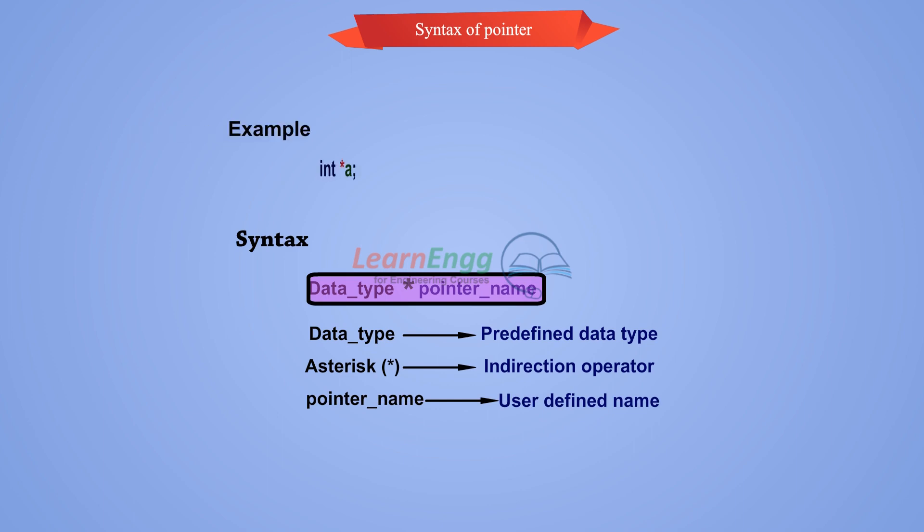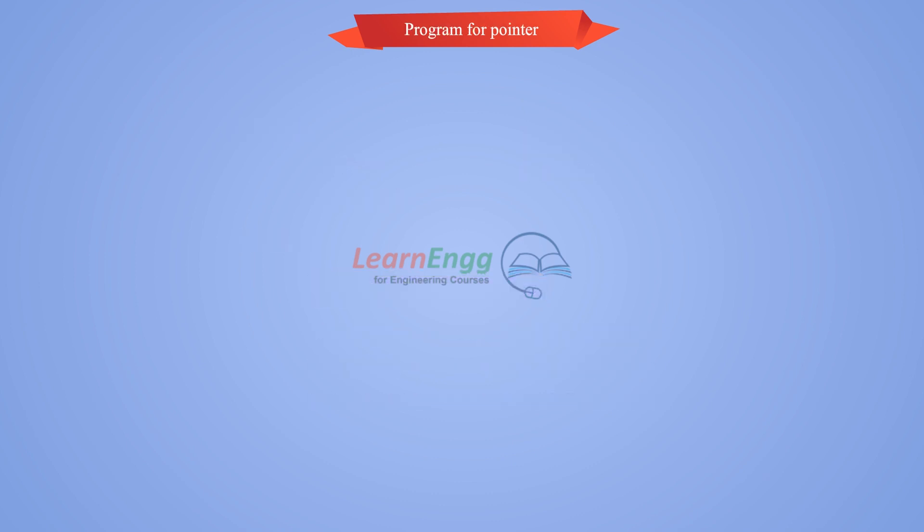For example, A is an integer pointer variable used to store the address of the variable. Integer variable B is 10. Now A will contain the address of the variable B.